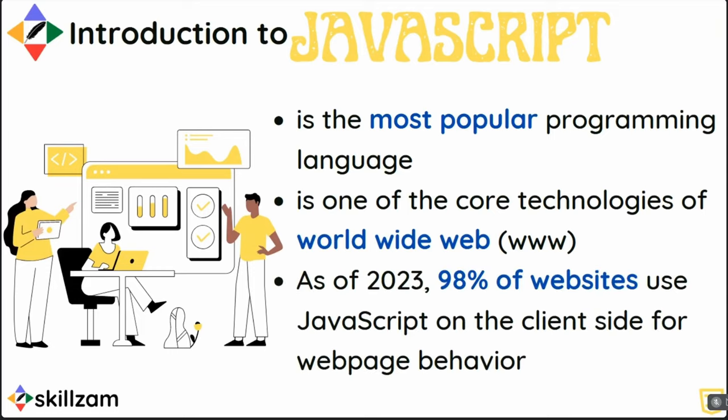As of 2023, specifically as of May, 98% of the websites in the world are currently using JavaScript for their client-side behavior — for managing the client side of the programming.